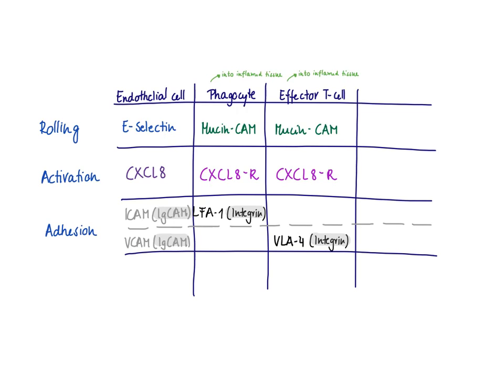Naive T cells are hanging around in the lymph nodes. Once they find an antigen-presenting cell that recognizes their T cell receptor, they clonally expand and become effector T cells. Those effector T cells — either a T helper or a T killer cell — need to leave the lymph node via the efferent lymphatic vessel, enter the bloodstream, and then get to the site of infection to help clear it.